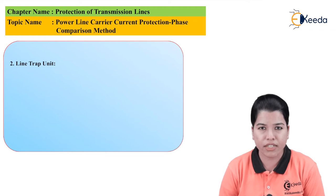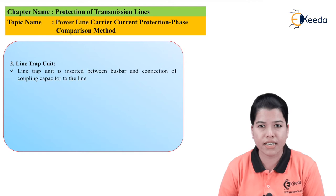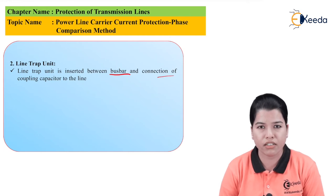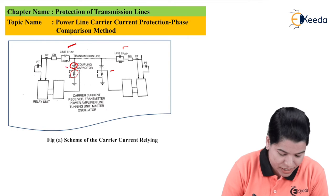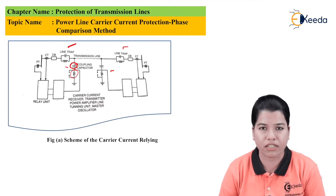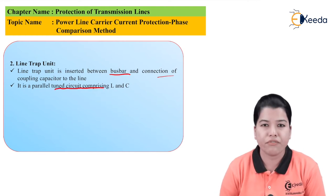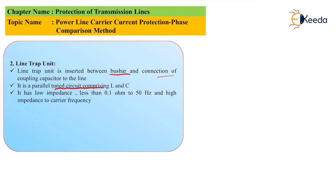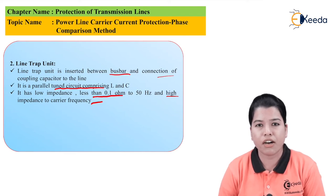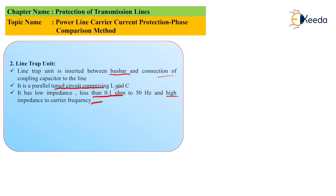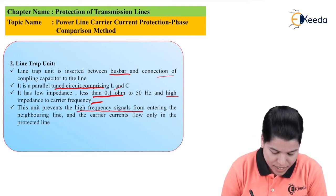Now let us study the line trap unit. The line trap unit is inserted between the bus bar and the connection of the coupling capacitor in the line. It is connected after the coupling capacitor and between the coupling capacitor and the circuit breaker. It is basically a parallel tuned circuit consisting of L and C — inductance and capacitor. It has low impedance, less than 0.1 ohm, to 50 hertz, and high impedance to the carrier frequency. This unit prevents the high frequency signal from entering the neighboring line, and confines the carrier current to flow only in the protected line.